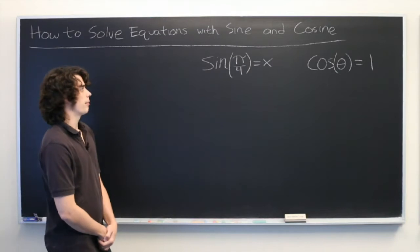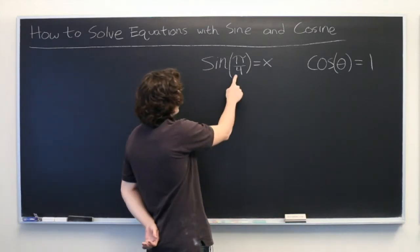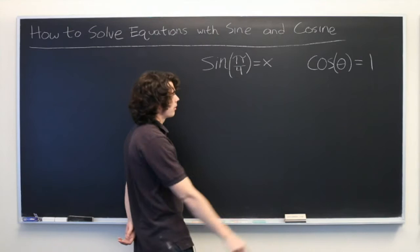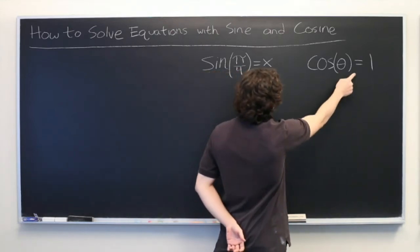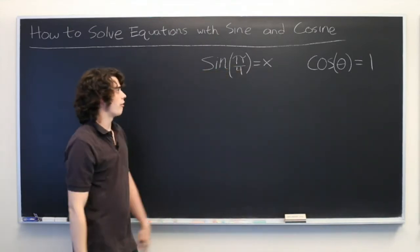Here we have two examples. We have sine of pi over 4 equals x and cosine of theta equals 1. We want to solve for x and theta.